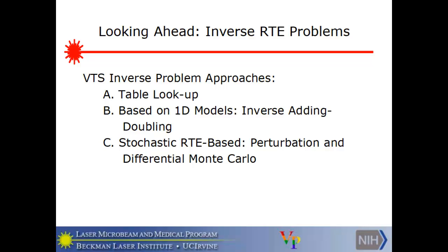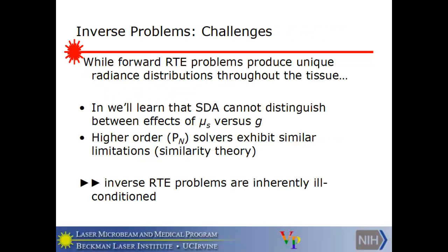So now let me look ahead a little bit, as I said I would, at inverse solutions. There are two that are already in the VTS. I mentioned these particularly. The table lookup model, which is simple but useful. Then based on 1D models, inverse adding doubling, which will be talked about from a practical point of view on Wednesday. I'm going to just outline the ideas involved. And then finally the stochastic model I just alluded to, based on perturbation and differential Monte Carlo.